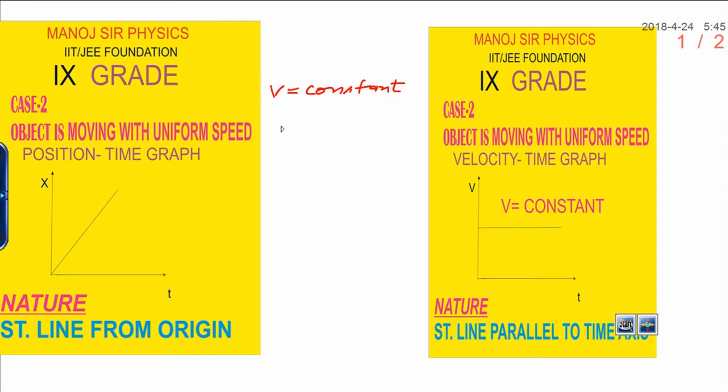If you want to draw the position-time graph, if speed is constant, you know speed is what? Change in position upon change in time. If v is constant, I can write change in position equals v into delta t.